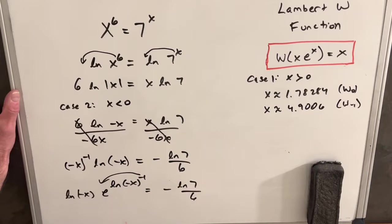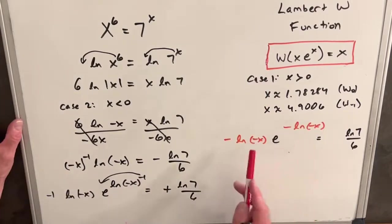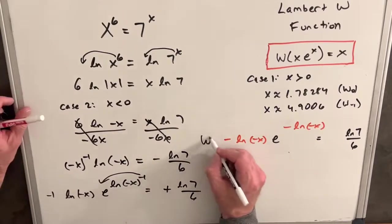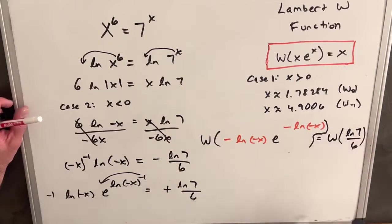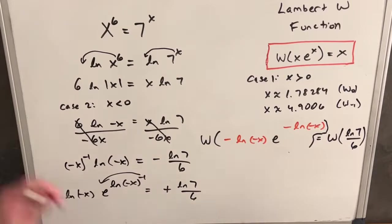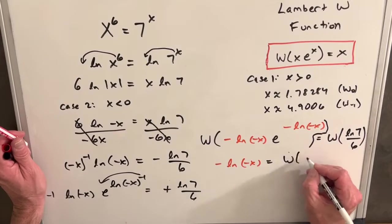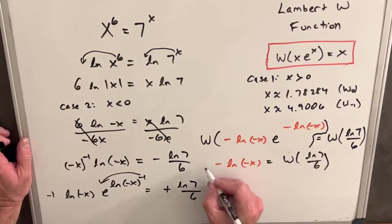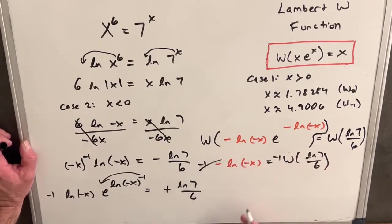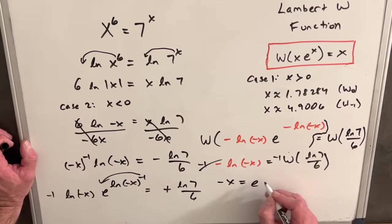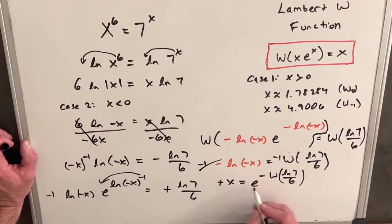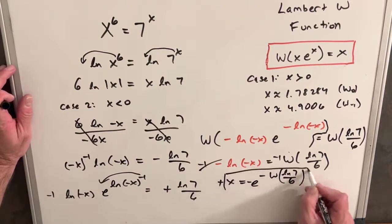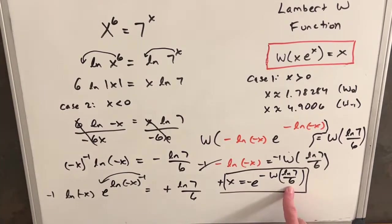We bring the negative 1 to the front and multiply both sides by negative 1, so this becomes a plus. We're now again in exactly the format for the Lambert W function. Applying it to both sides, the left gives −ln(−x), which equals W(ln 7 / 6). Multiplying by negative 1 on both sides and using the property of e and ln, we get −x = e^{−W(ln 7/6)}, and then multiplying by −1: x = −e^{−W(ln 7/6)}. Notice there is now no negative sign inside the Lambert W argument.